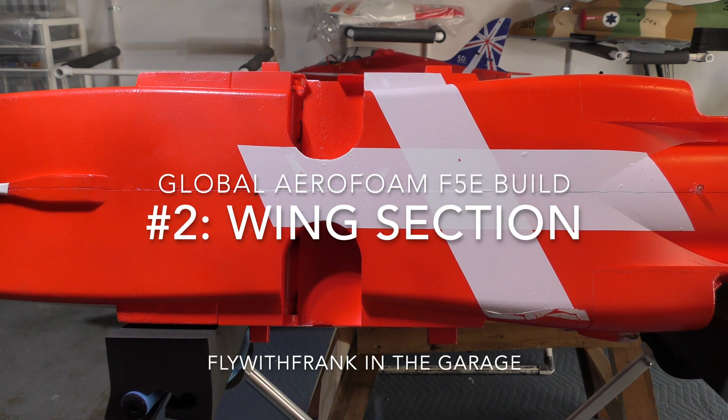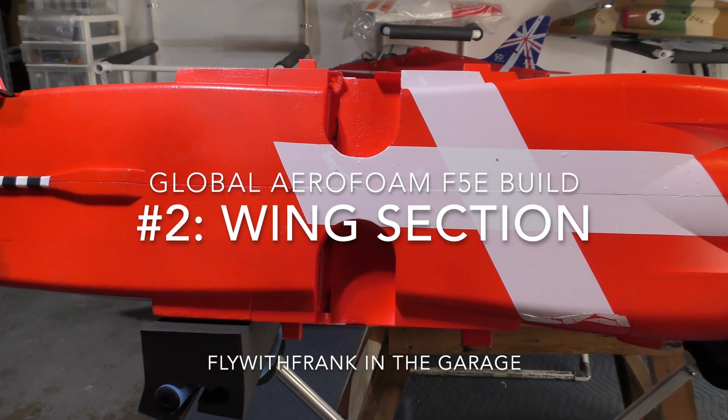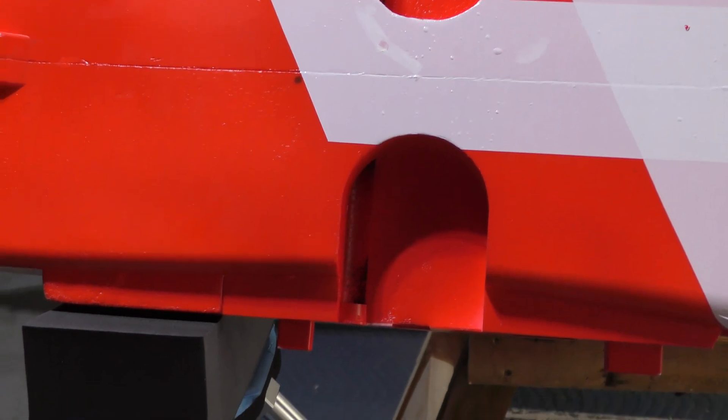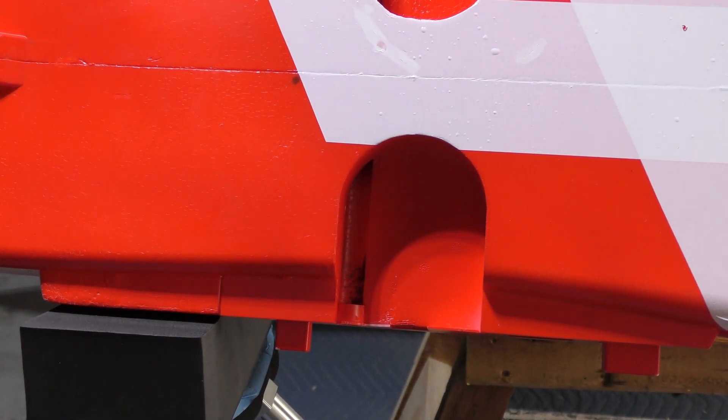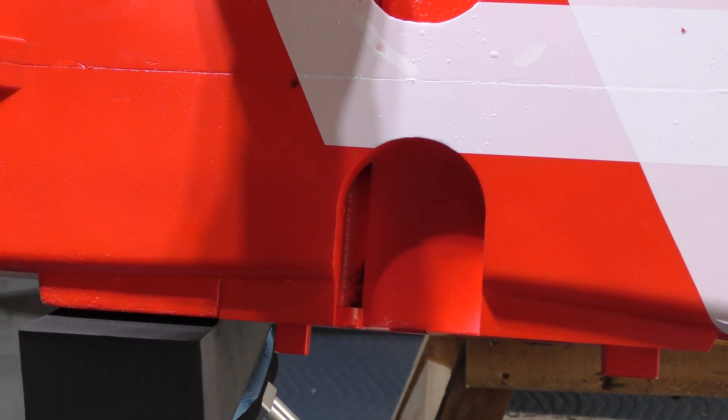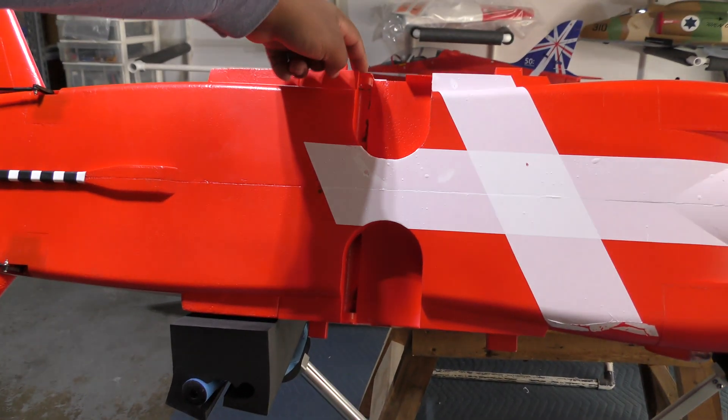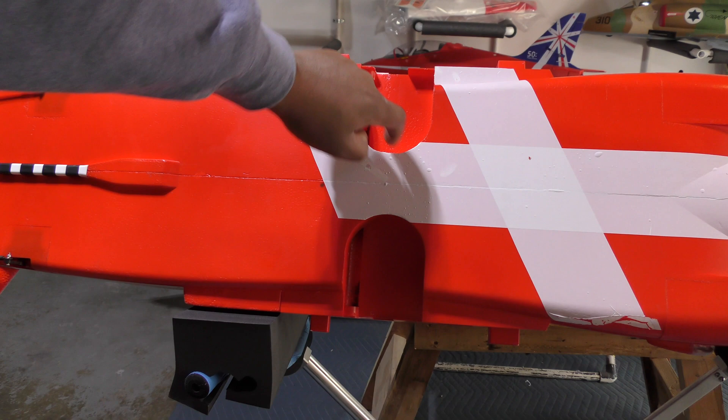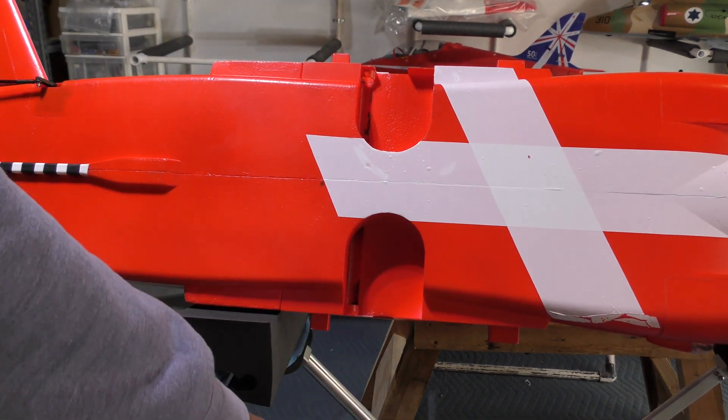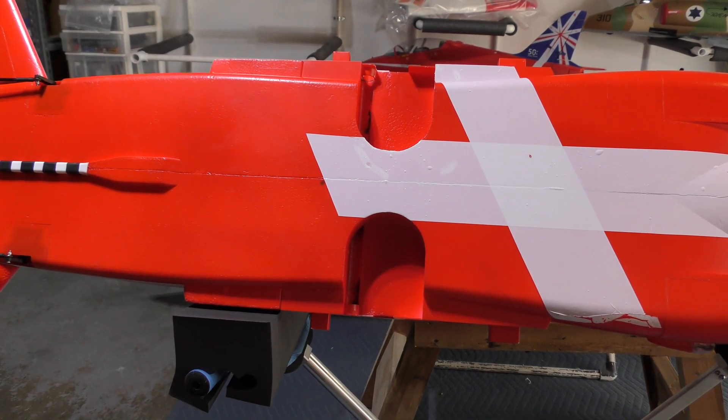The next thing I wanted to take care of on the F5 is the wing. When you look at the wing, the carbon rod goes up through here, passes down here, and through the other end. But if you look closely...